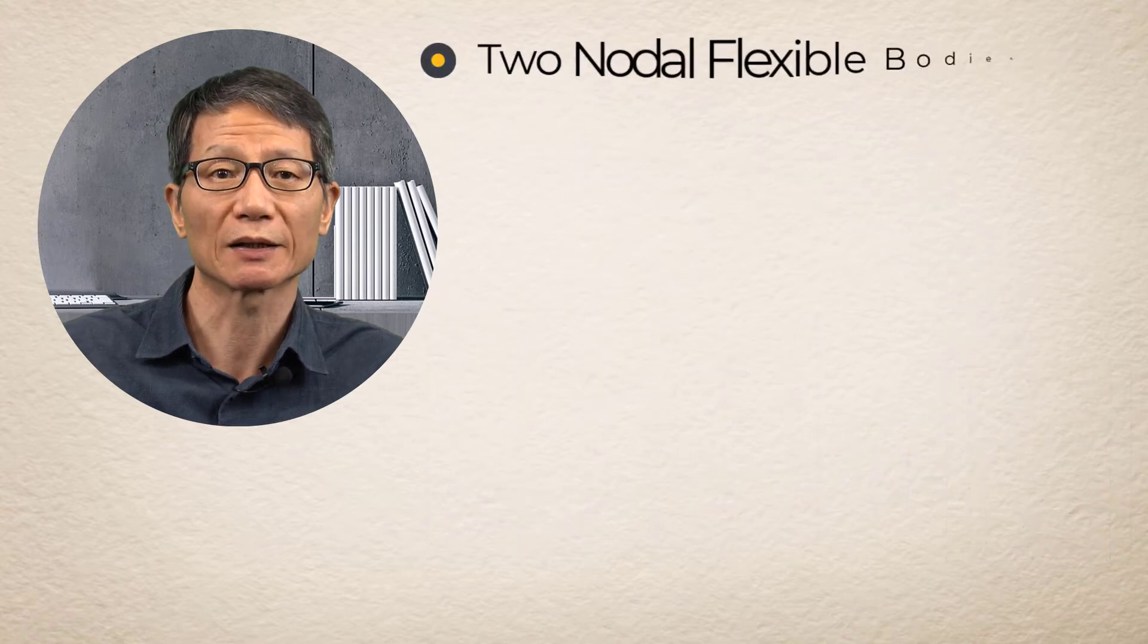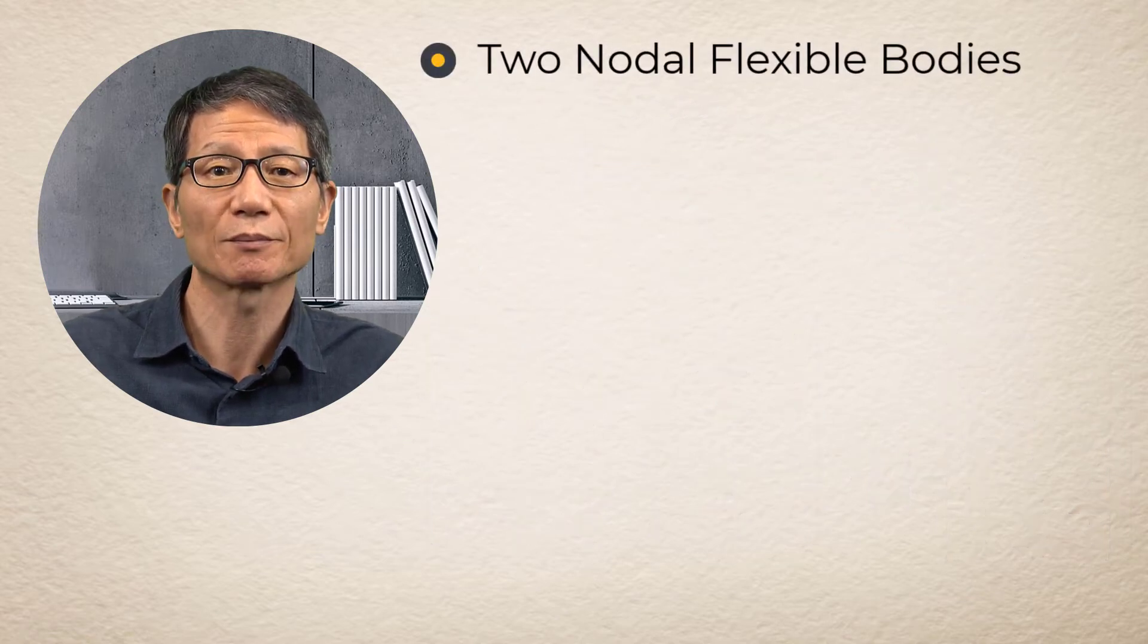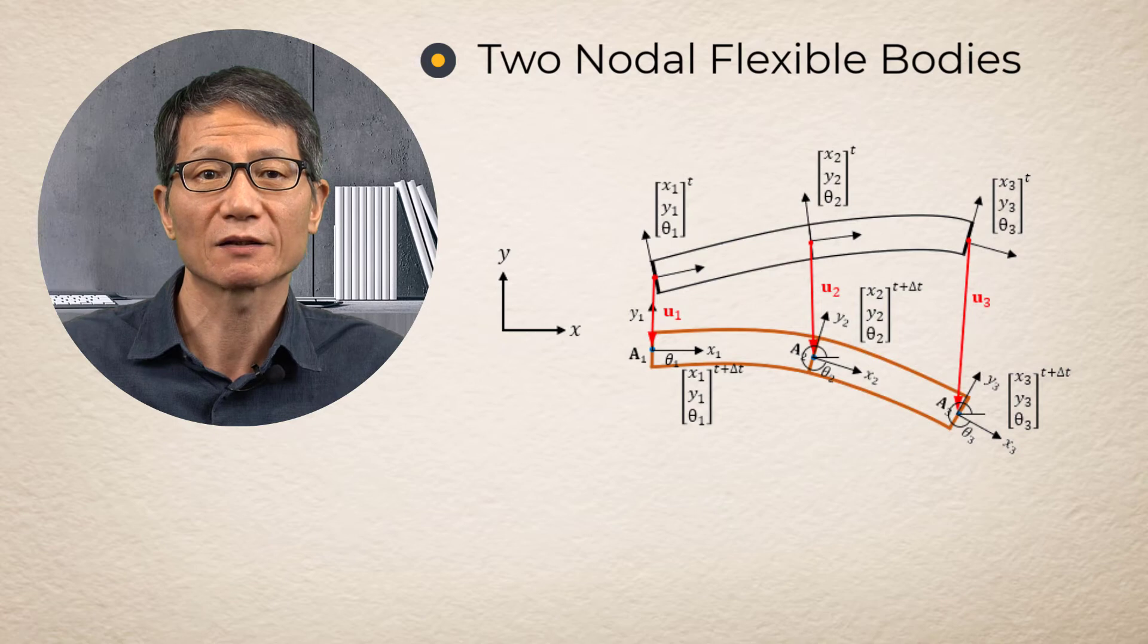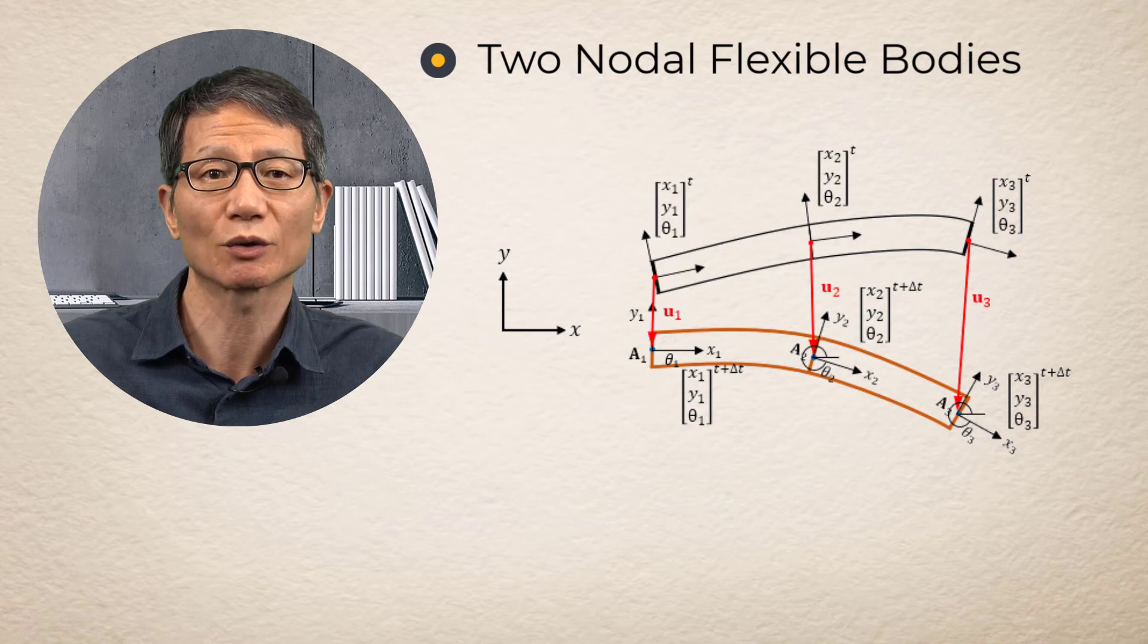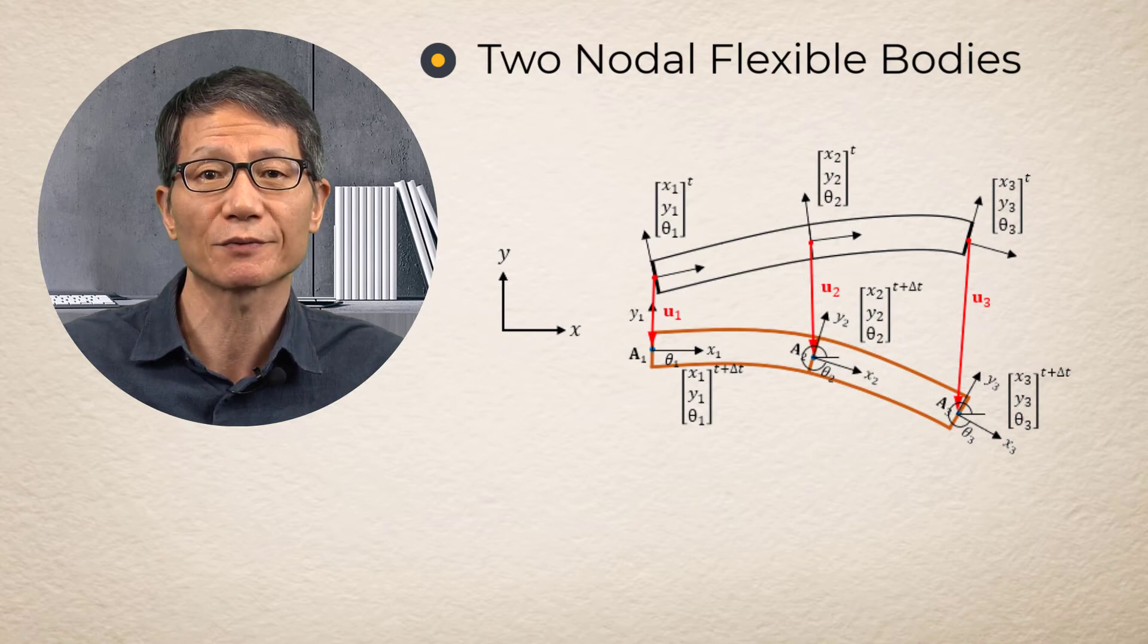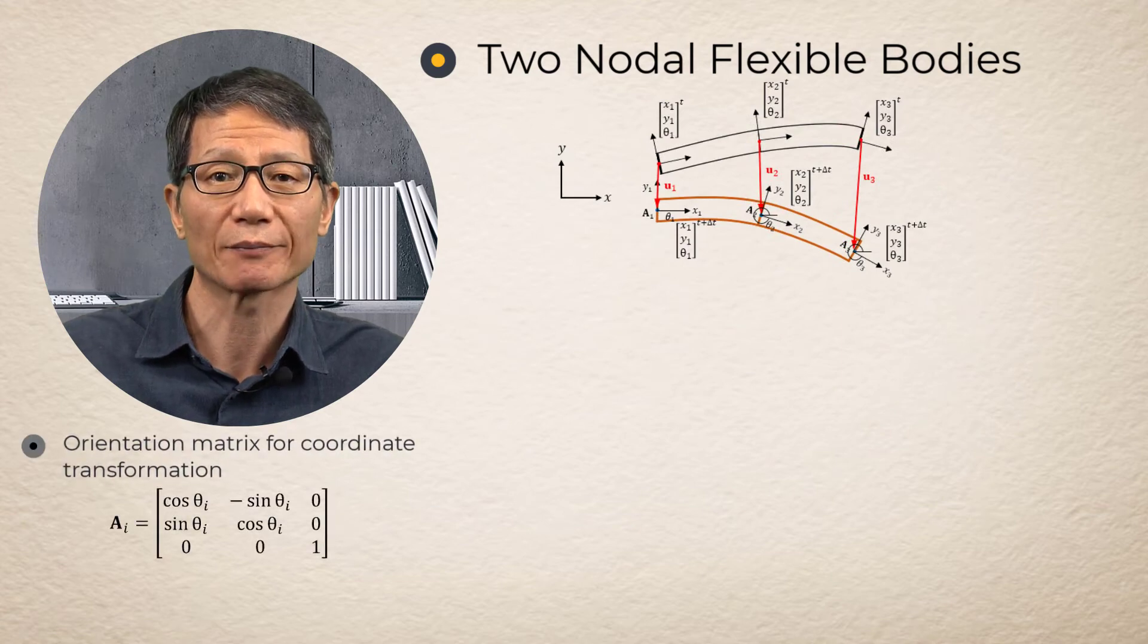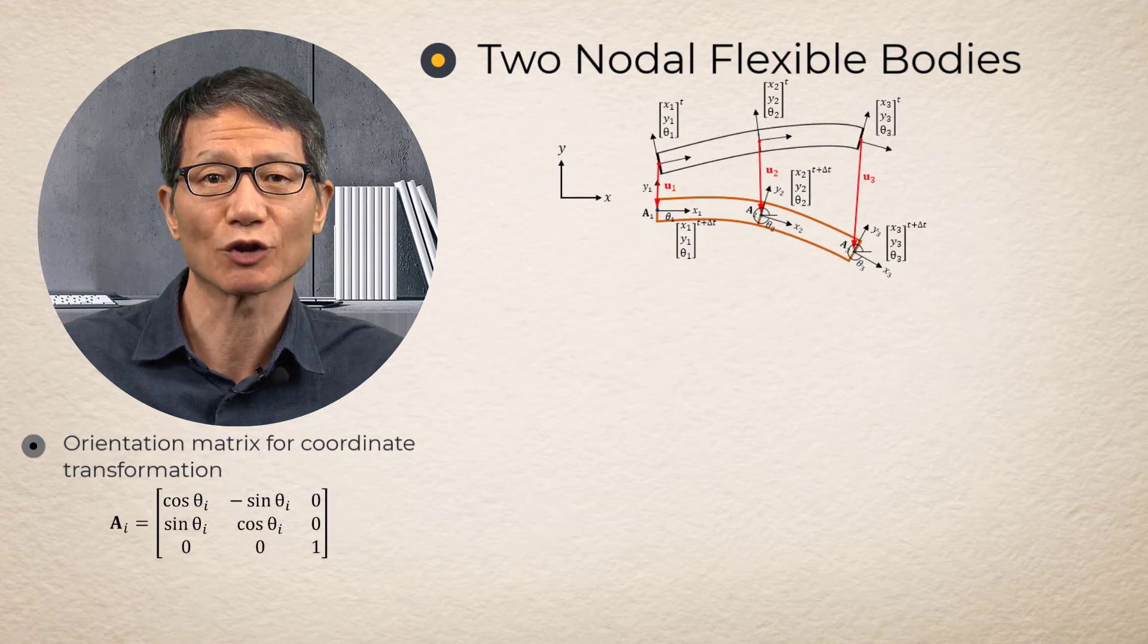Two nodal flexible bodies. Let's apply the proposed beam theory for the beam example connected in a serial fashion. Since the deformation must be measured with respect to the element reference frame, a coordinate transformation is required after the absolute deformation is measured.